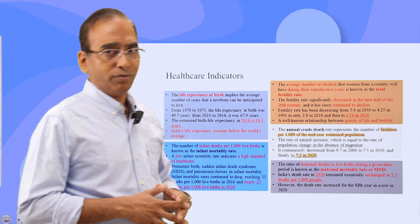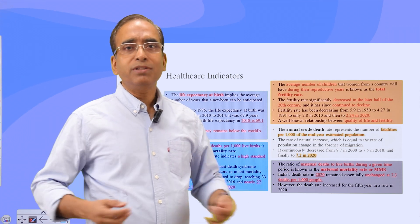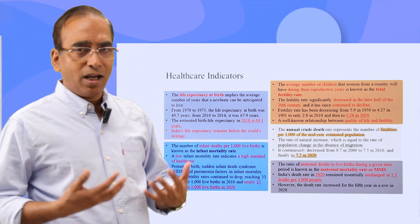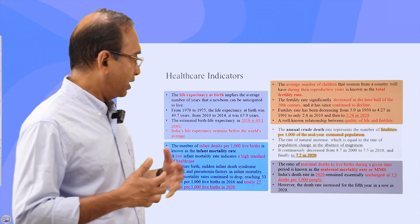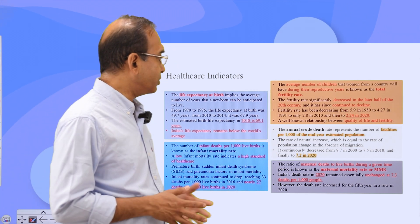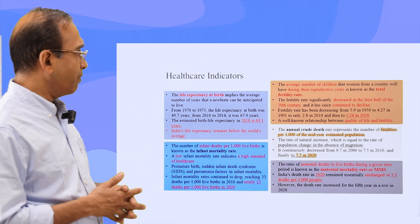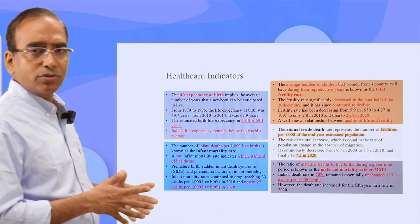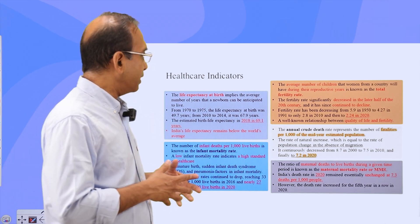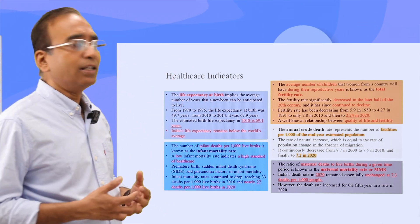Our population growth has really slowed down, but we have a large base, so with a large base and small population growth, we are still adding a large number to the population every year. Apart from that, there is an annual crude death rate and also maternal mortality rate, or MMR, which is also used as a major health indicator to understand progress.